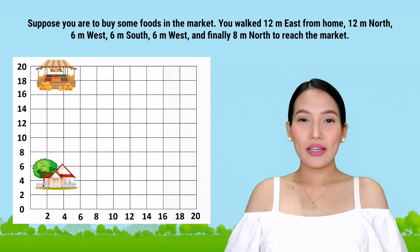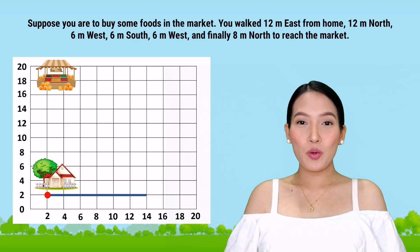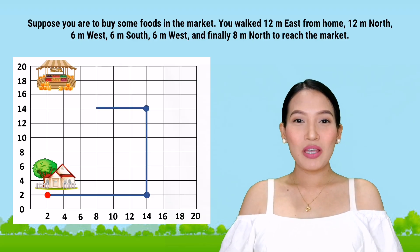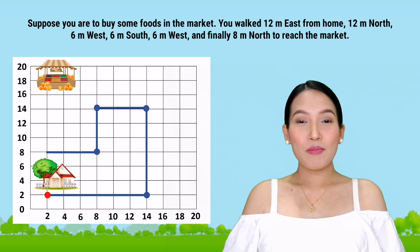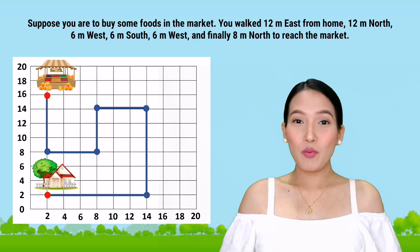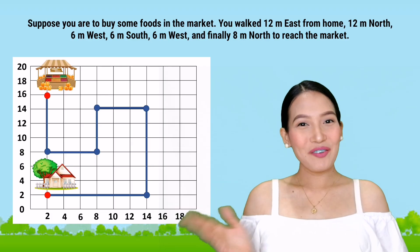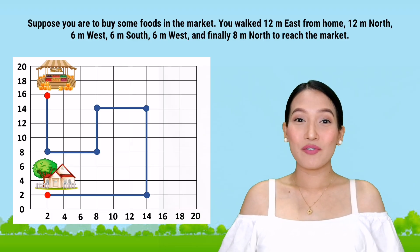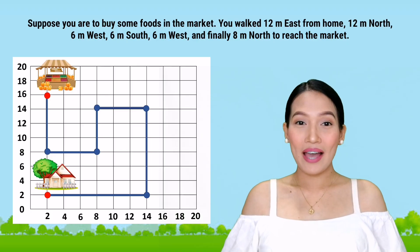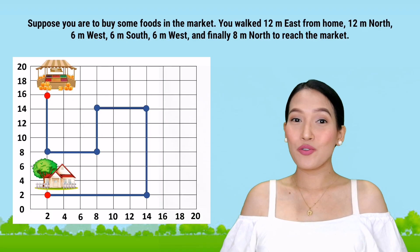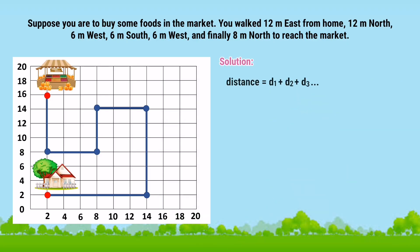Let's try another example. Suppose you are to buy some foods in the market. You walked 12 meters east from home, 12 meters north, 6 meters west, 6 meters south, 6 meters west, and finally 8 meters north to reach the market. Your total distance traveled is 50 meters, because we simply add all the lengths of paths: 12 plus 12 plus 6 plus 6 plus 6 plus 8 equals 50 meters.